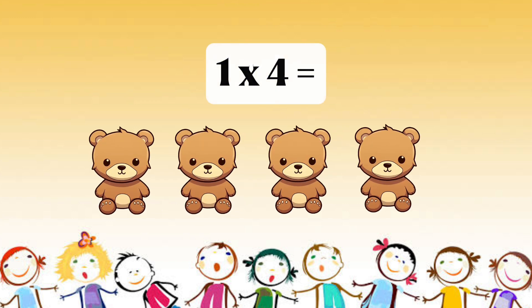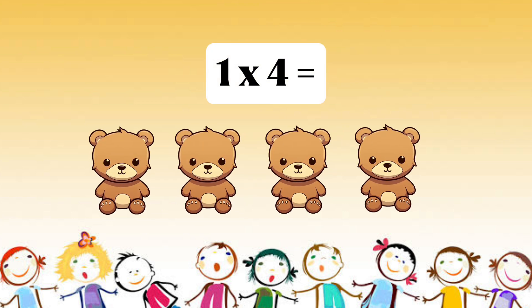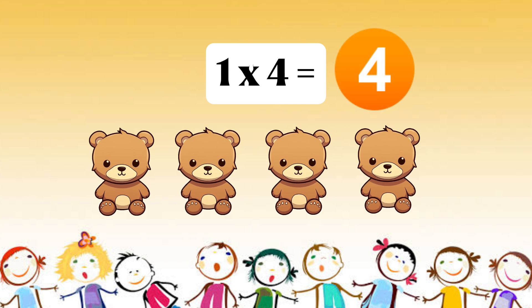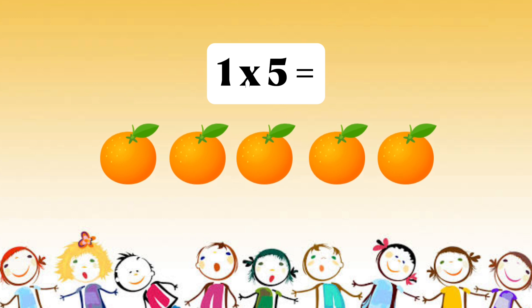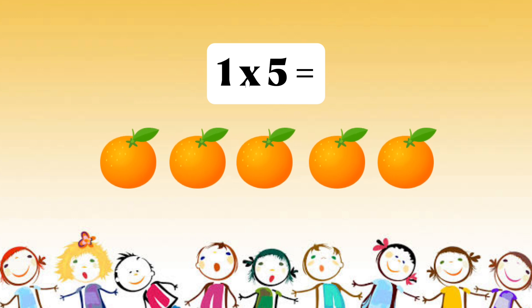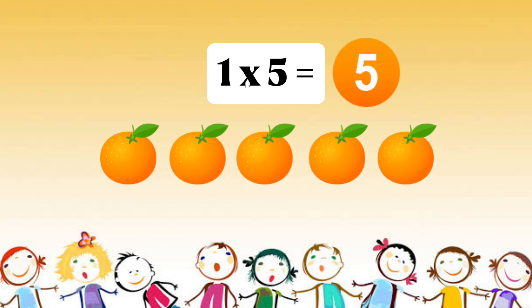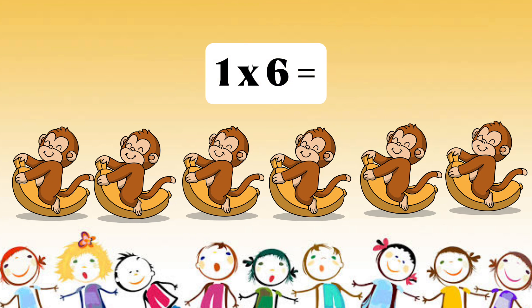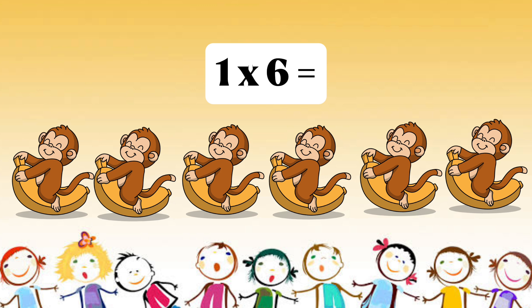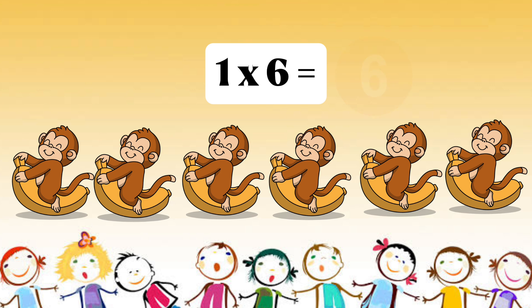1 multiplied by 4, or 1 times 4, equals 4. 1 multiplied by 5, or 1 times 5, equals 5. 1 multiplied by 6, or 1 times 6, equals 6.